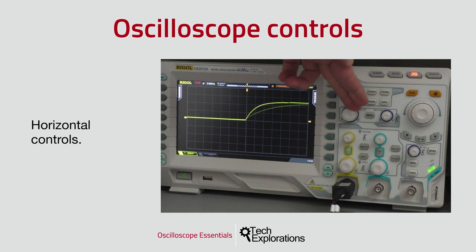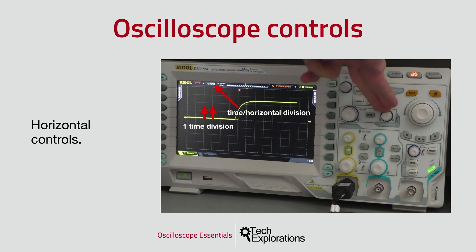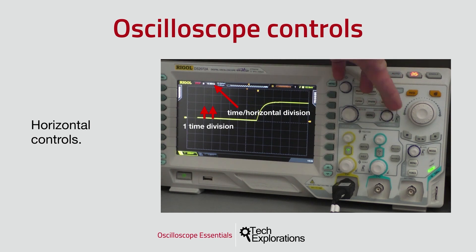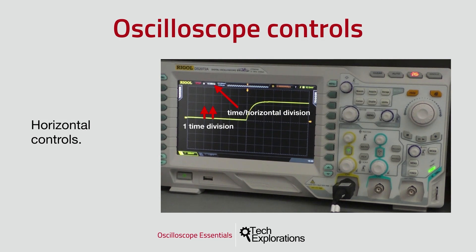Next are the horizontal controls, which allow you to work in the time domain. You can control two things on the horizontal axis. First, you can set how much time is represented by each horizontal division — turn the scale knob to increase or decrease the time per division. My oscilloscope has 14 horizontal divisions, so multiplying the time scale by 14 gives you the total time the screen contains. You can also control the horizontal position of the waveform by turning the position knob to move it left or right.